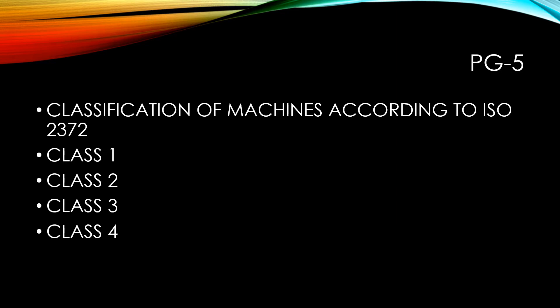Class 3: large prime movers and other large machines with rotating mass mounted on a rigid and heavy foundation which are relatively stiff in the direction of vibration. For example, turbo generator.